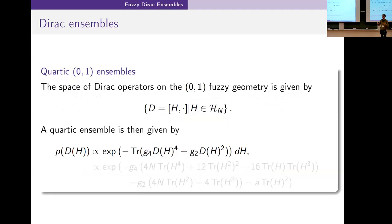For these (0,1) fuzzy geometries we look at quartic ensembles because they show some of the interesting behavior we want to see without becoming overly complicated. A quartic ensemble just means we're taking the trace of a quartic polynomial in D and we're keeping it symmetric for D to minus D.